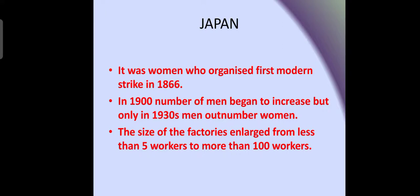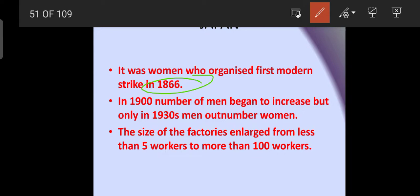Women organized the first modern strike in 1886. There was significant discrimination against women in industries. By 1900, factories began hiring more men, and by 1930, men outnumbered women in industries — women were replaced in the industrial sector.